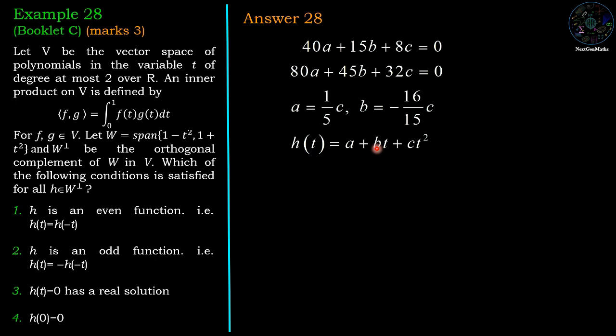Since h(t) equals a plus bt plus ct squared, then substitute the value of a and b. Then we have h(t) equals c by 15 times (3 minus 16t plus 15t squared).